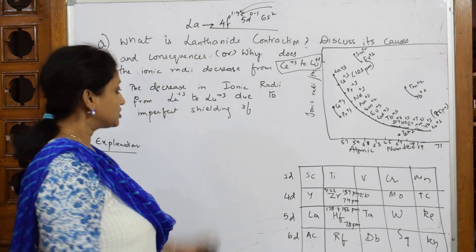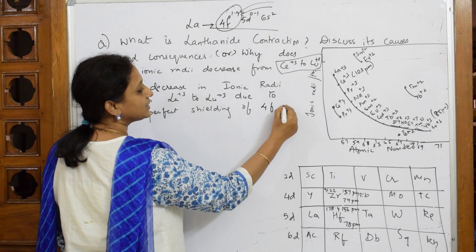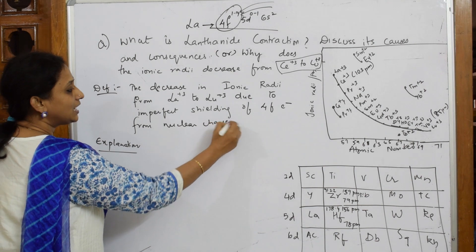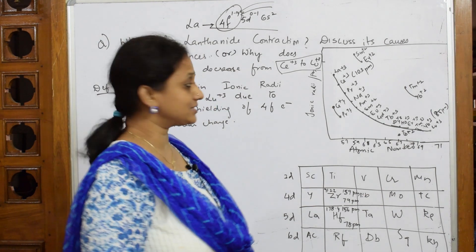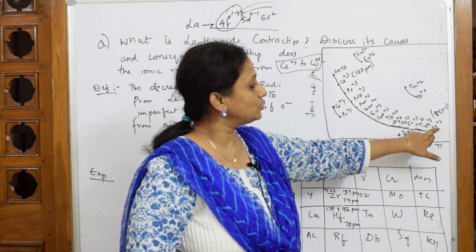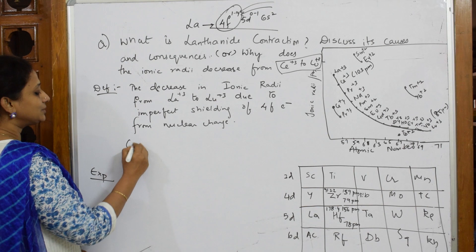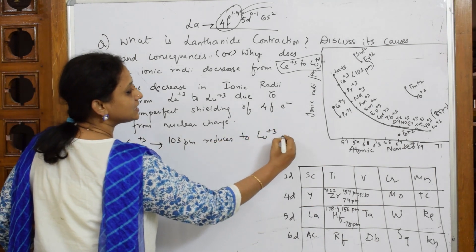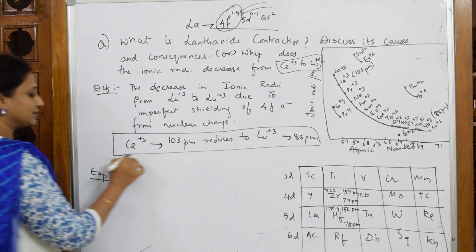Most students write 5d or 6s — please don't do that. Imperfect shielding is specifically of 4f electrons from the nuclear charge. After writing the definition, move to the explanation. For example, the ionic radii of cerium³⁺ is 103 picometers, and due to lanthanide contraction it comes down to lutetium³⁺ at 85 picometers. You should remember these values to get that extra mark in the exam.